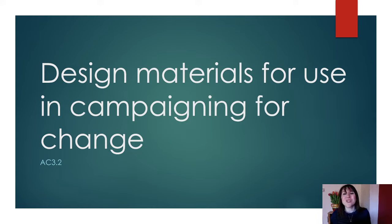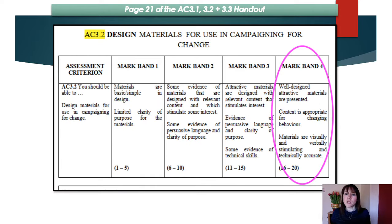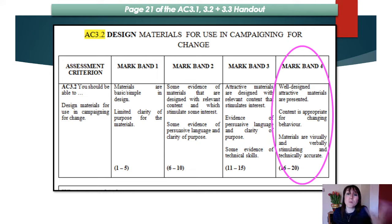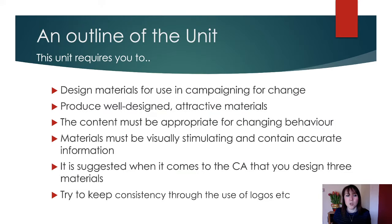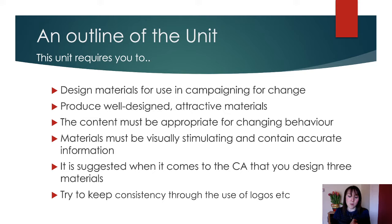Then we move into the actual design of your materials. To get into the top band — band four — you need well-designed and attractive materials. The content must be appropriate for changing behaviour. They have to be visually and verbally stimulating and technically accurate. You have to be able to change people's perceptions. In the controlled assessment you need to design three materials — they say three, so I wouldn't do any more than three.